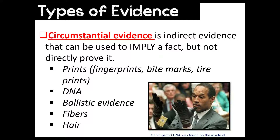Circumstantial evidence is anything that's not direct — it's indirect evidence that can be used to imply a fact but not directly prove it. Ask yourself: is there some investigation work that has to be done to this piece of evidence? Did you see it, hear it, or is it written as a report? If not, it's probably circumstantial. Examples include prints, DNA, ballistic evidence, hair, fibers, and blood spatter. In Unit 2, we will classify all of these as biological or physical evidence and discuss them as circumstantial or direct.